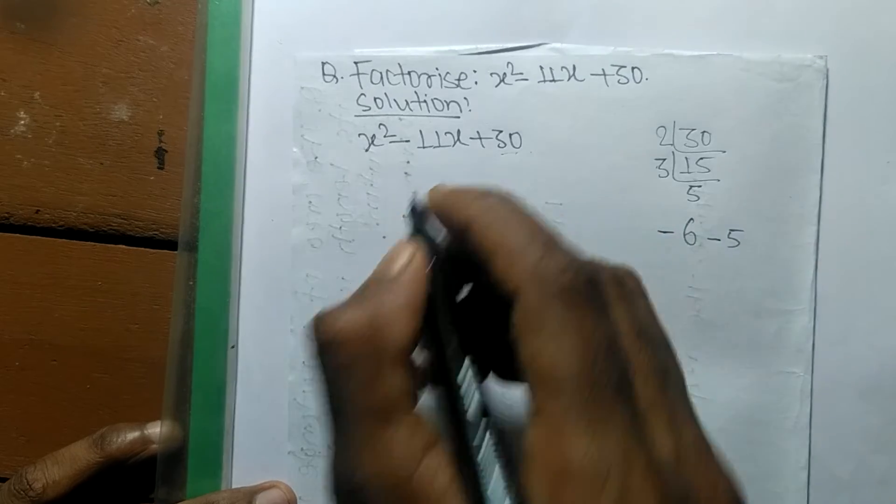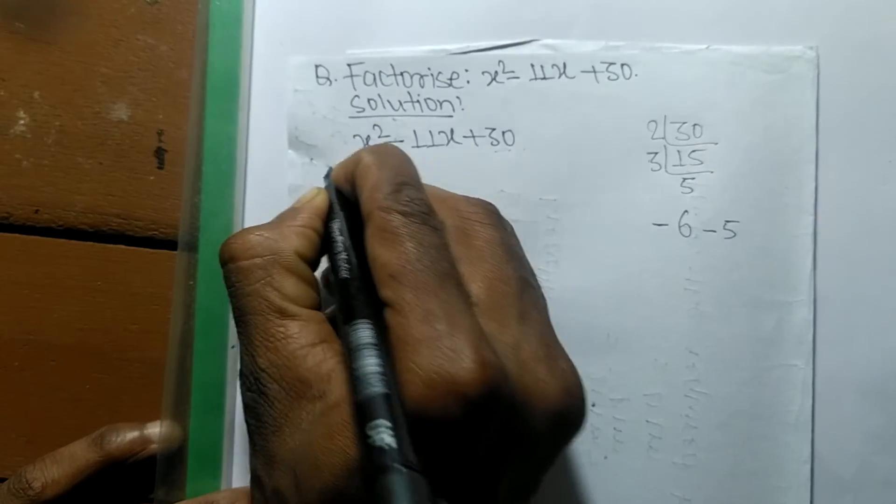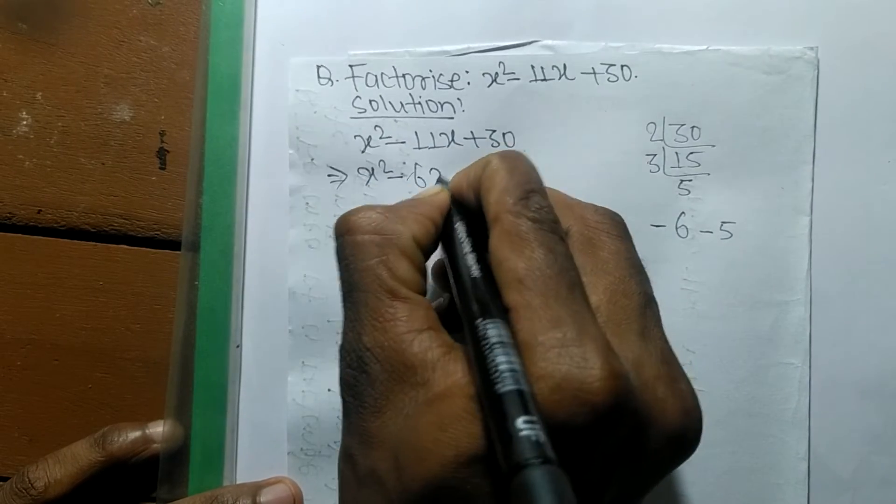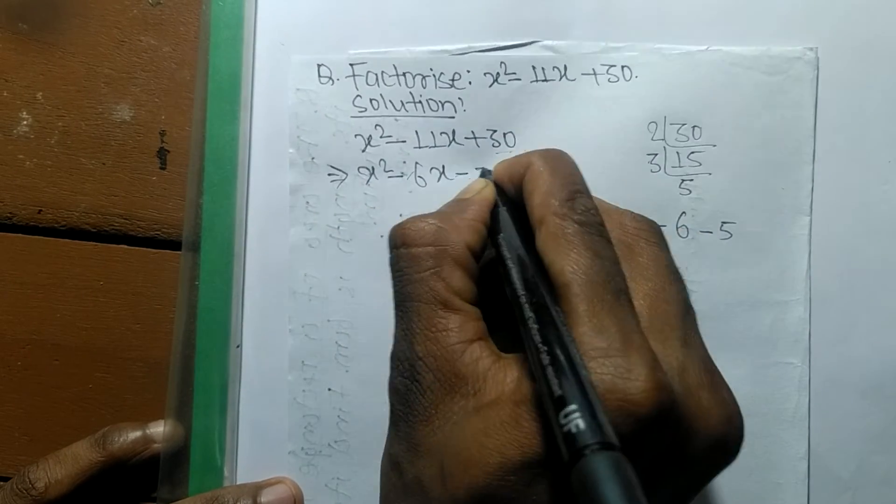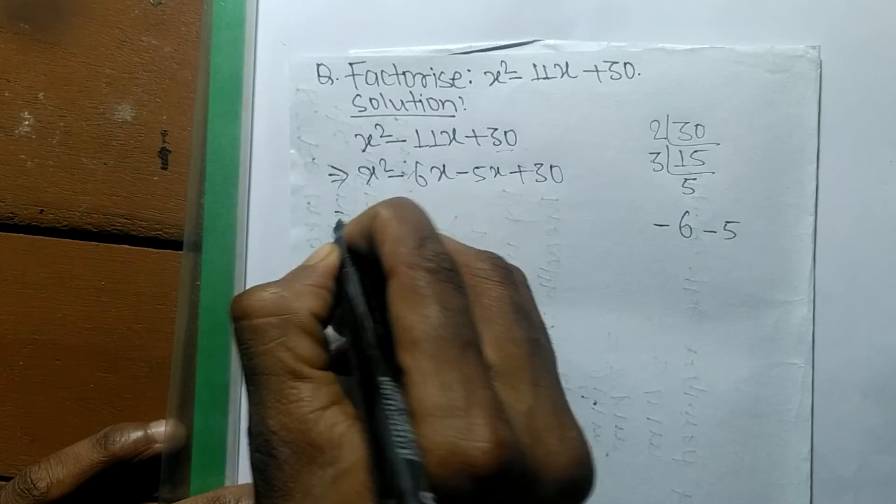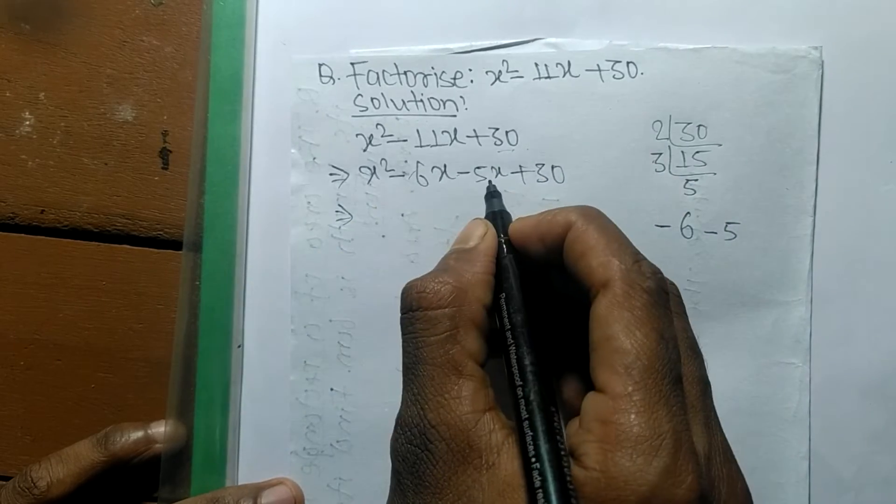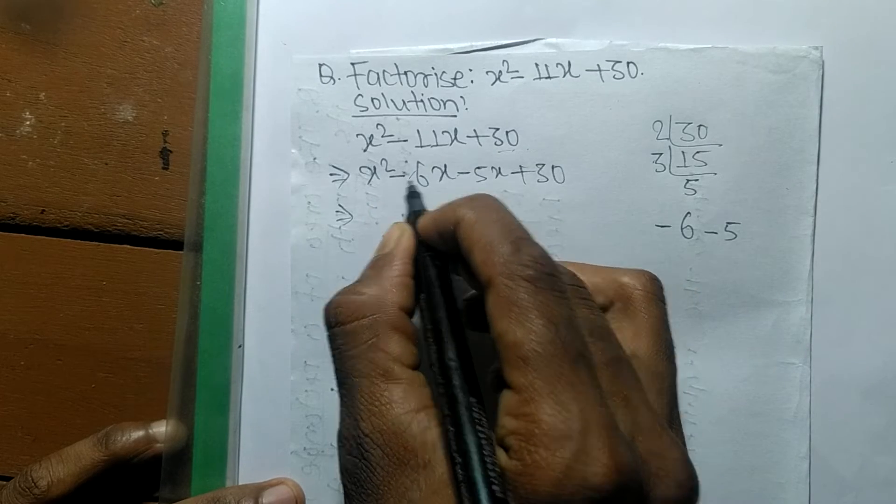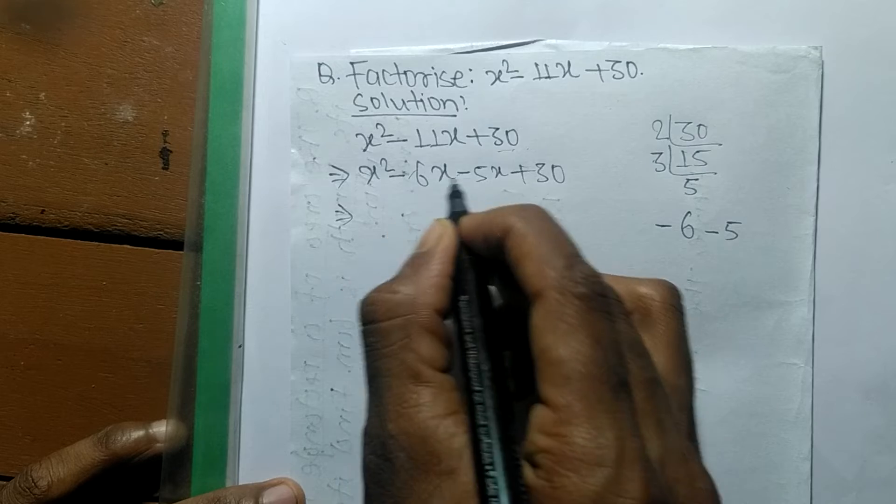So we can write it as x squared minus 6x minus 5x plus 30. Minus 6x minus 5x equals minus 11x, and 6 times 5 equals 30.